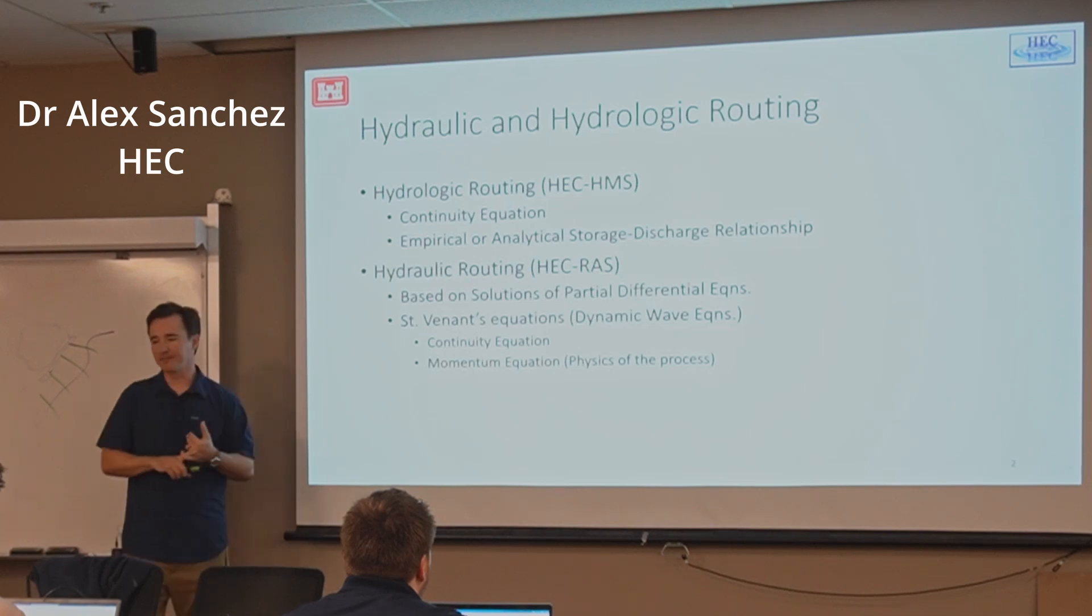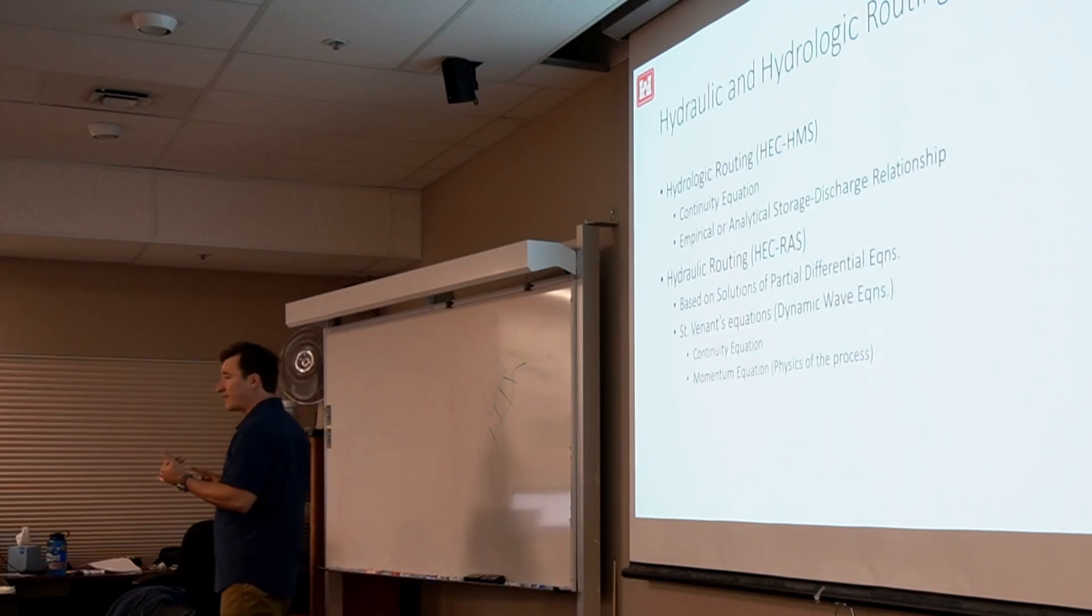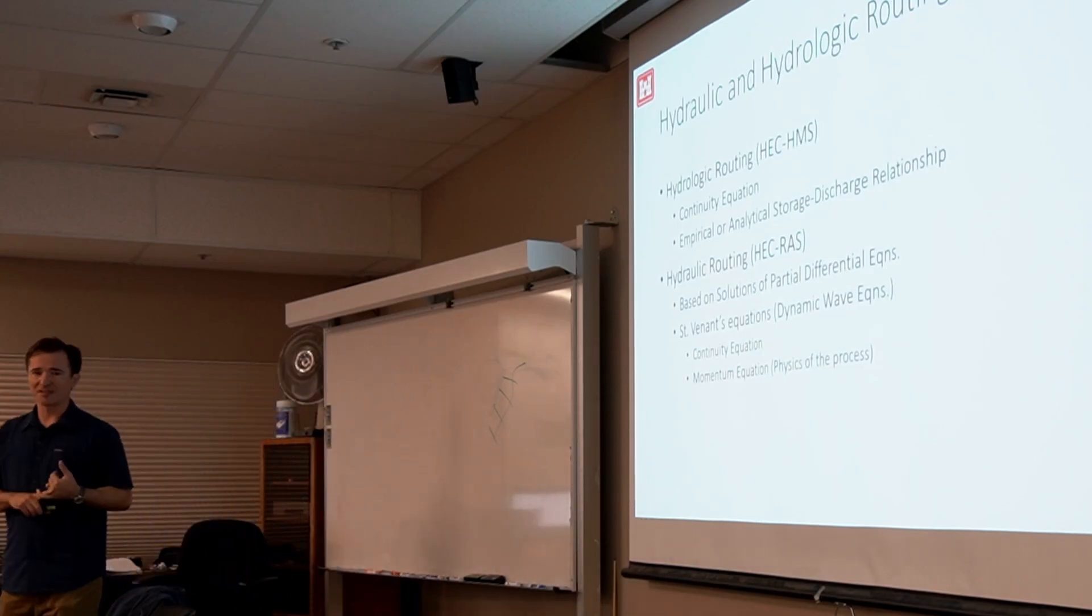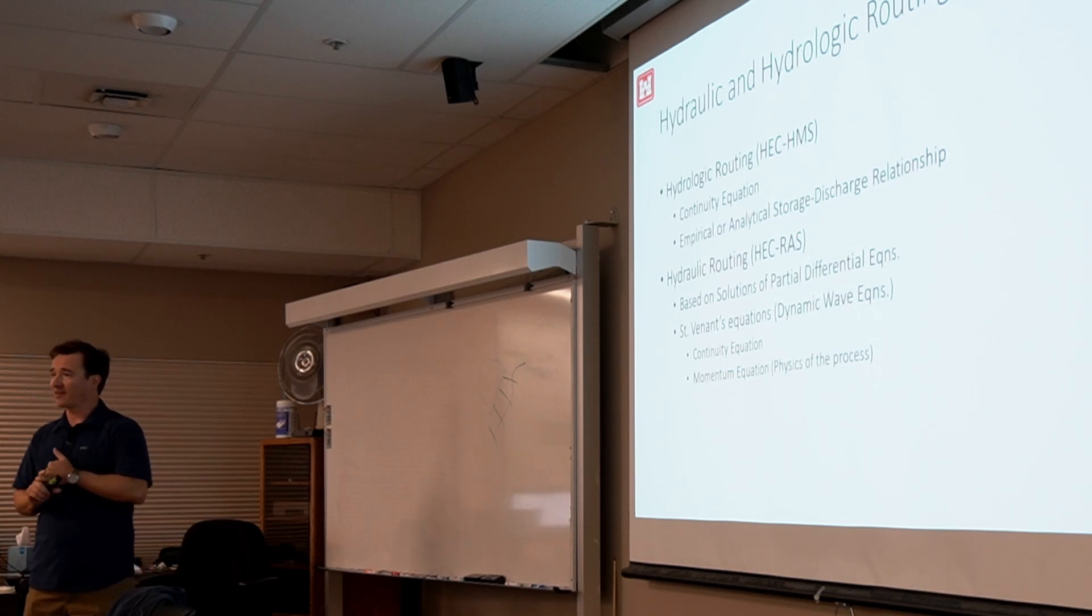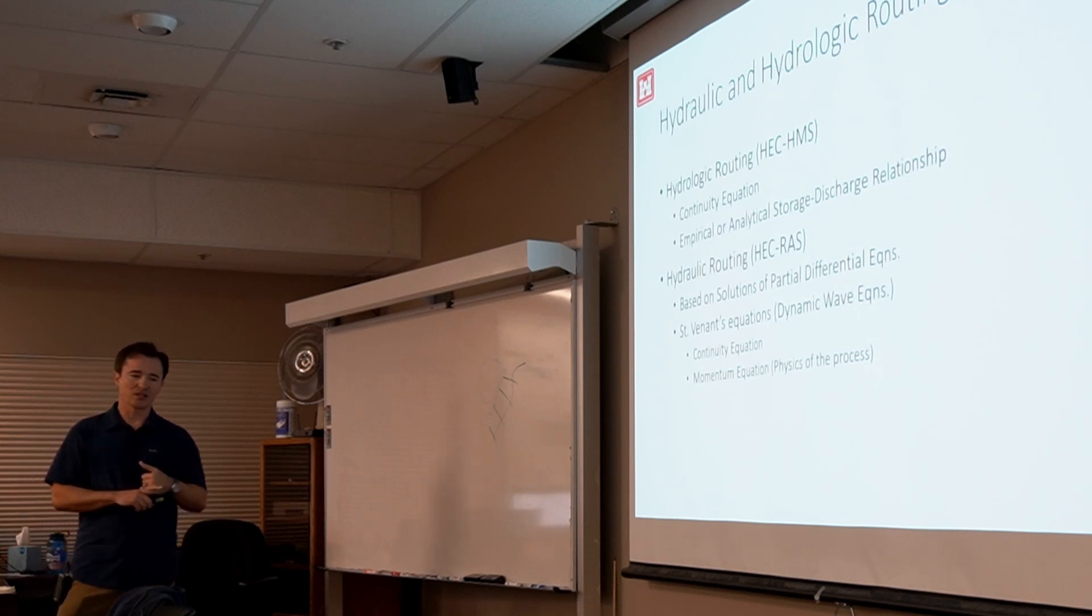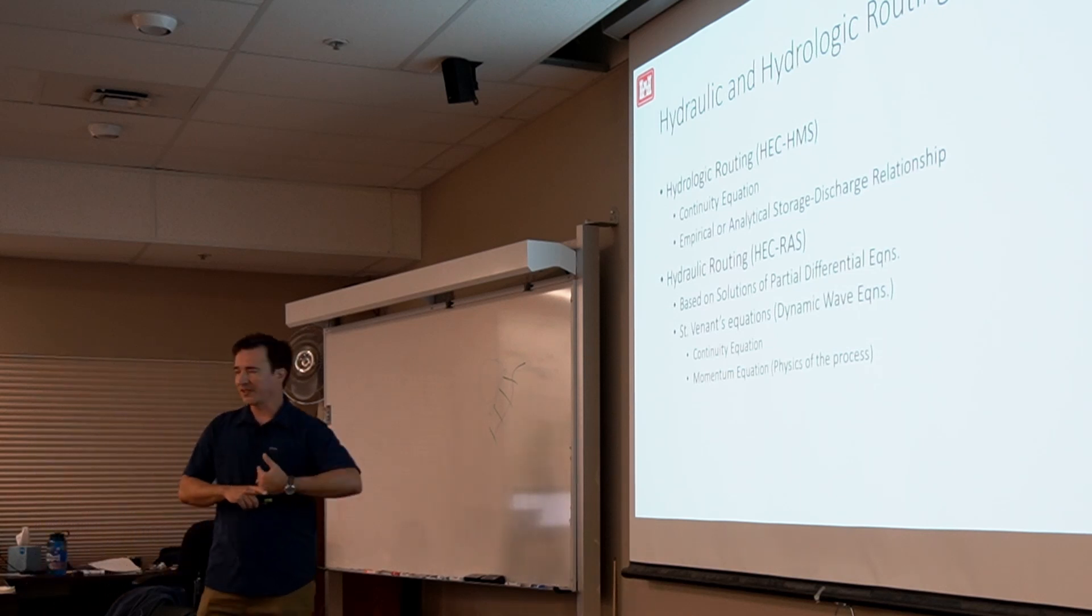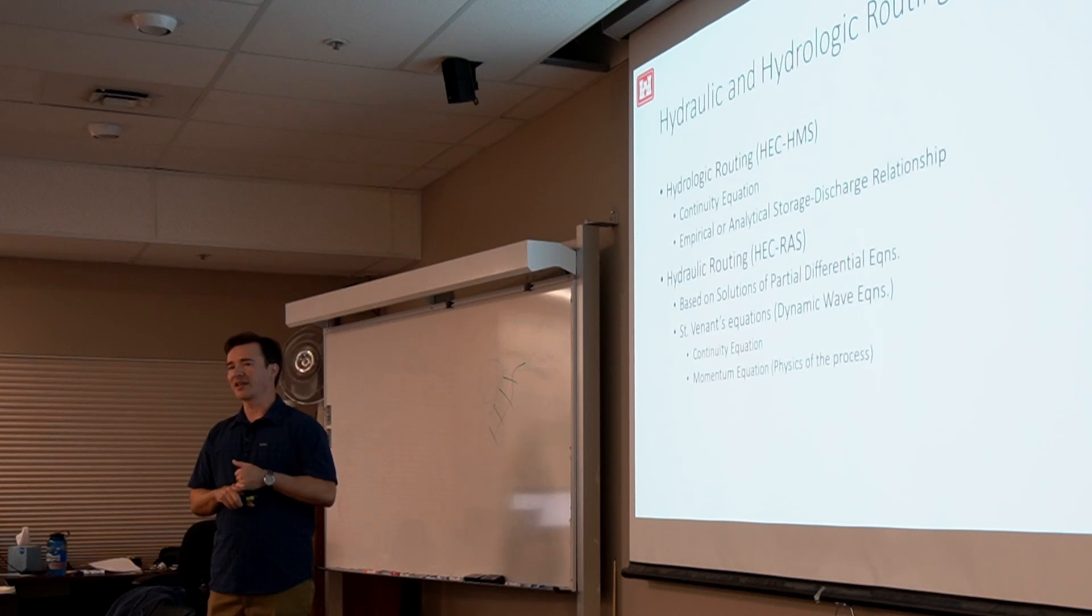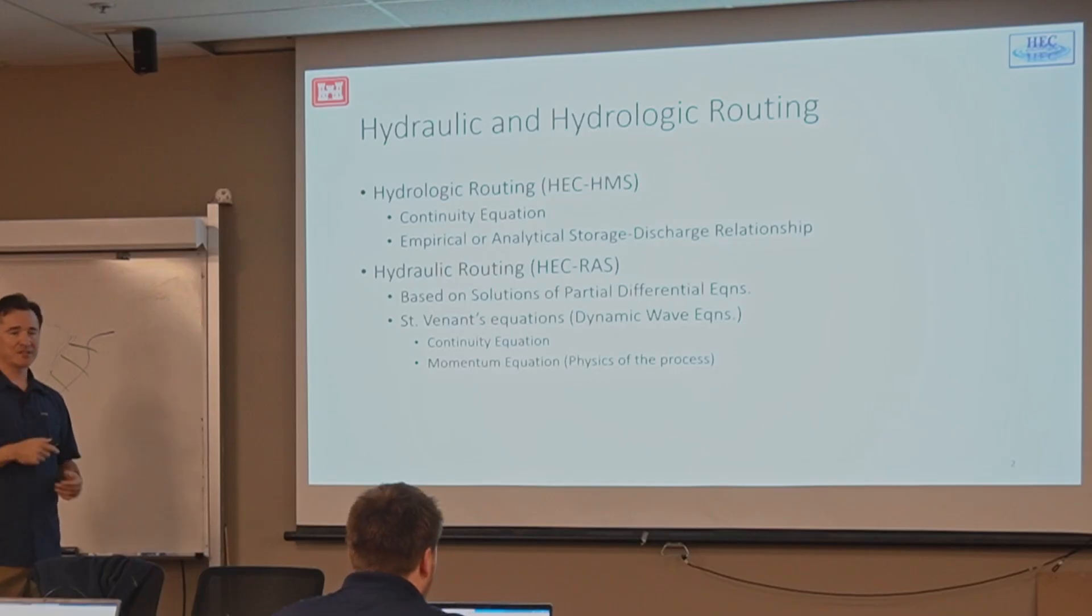RAS has one of them, Muskingum-Cooge routing. In RAS, you have that as an option. If you take the unsteady flow class, you'll see that sometimes that's useful in very steep reaches where the 1D finite difference model can have trouble. So it's useful in those situations.